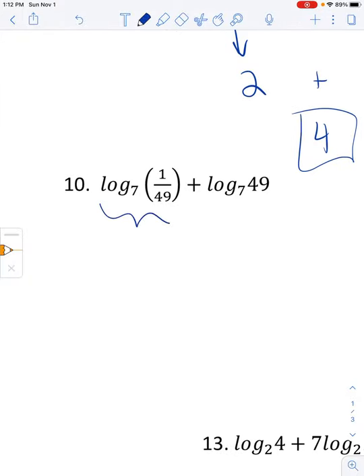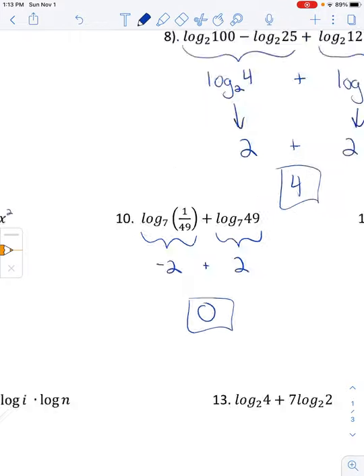So I'm going to just go ahead and assess each side here instead of multiplying. Log base 7 of 1 over 49 is negative 2. 7 to the power of negative 2 is 1 over 49. And log base 7 of 49 is positive 2. Add those two numbers together, and you get 0.